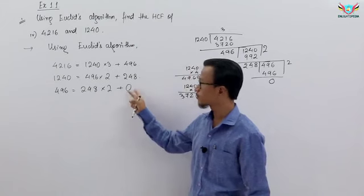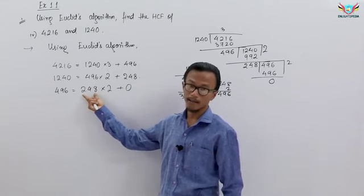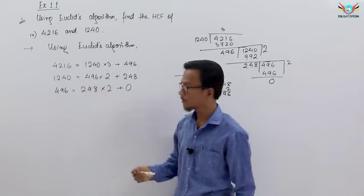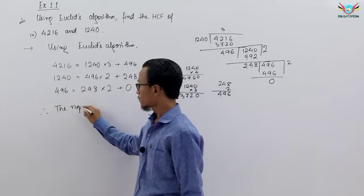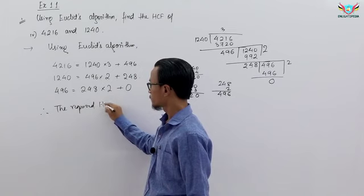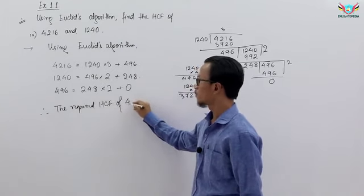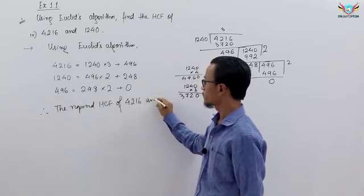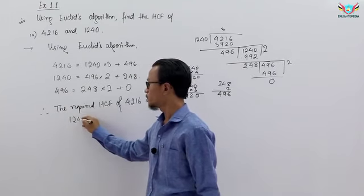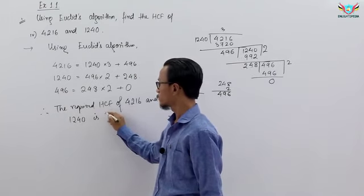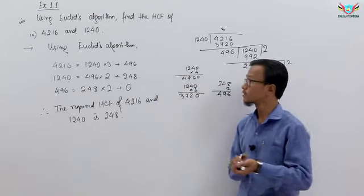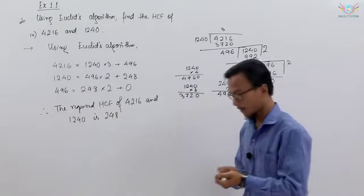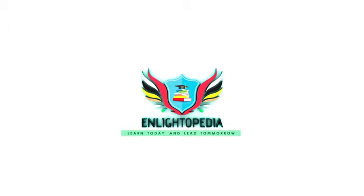So therefore, HCF of 4216 and 1240 is 248. So this is the solution for first question.